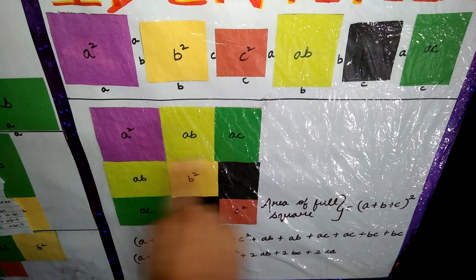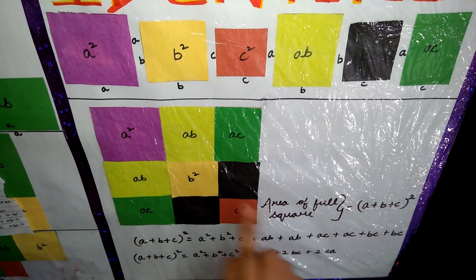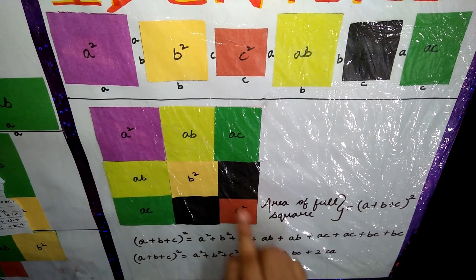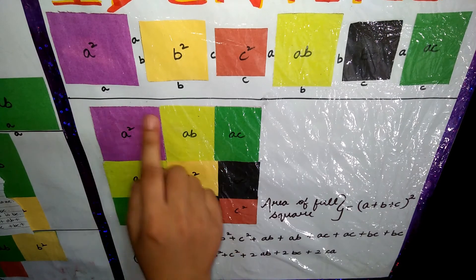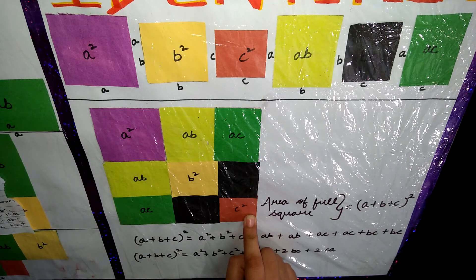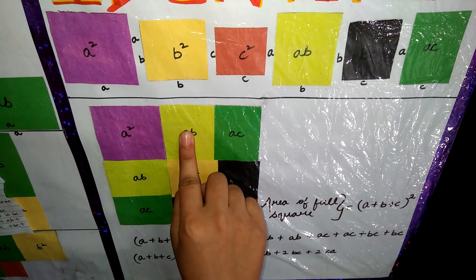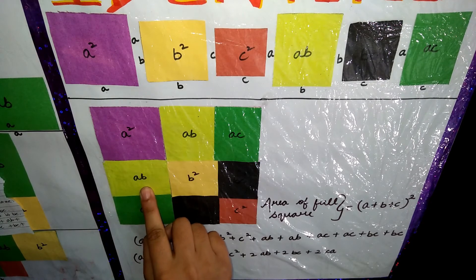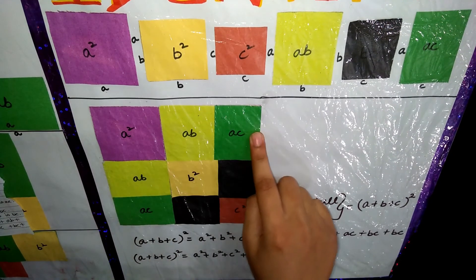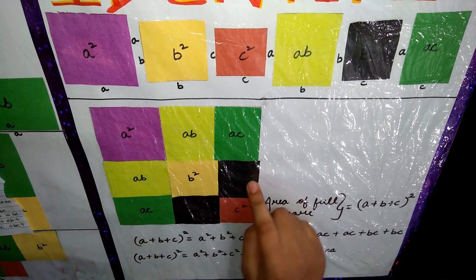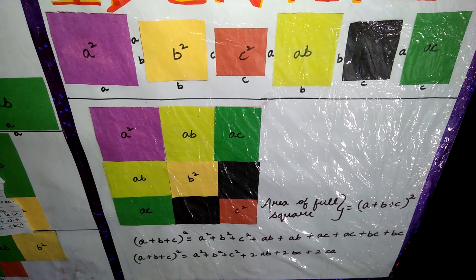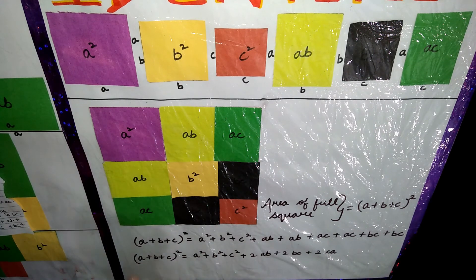As we join all the smaller pieces this will become a big square. Pieces number 1, 5 and 9 this is a, b and c. And now 4th and 2nd this is a, b and this is a, b and this is a, b. Now 7th and 3rd this is a, c and this is a, c. Now 8th and 6th this is b, c and this is b, c. So now it is proved that a square plus b square plus c square plus 2ab plus 2ac and plus 2bc. This is a plus b plus c whole square.